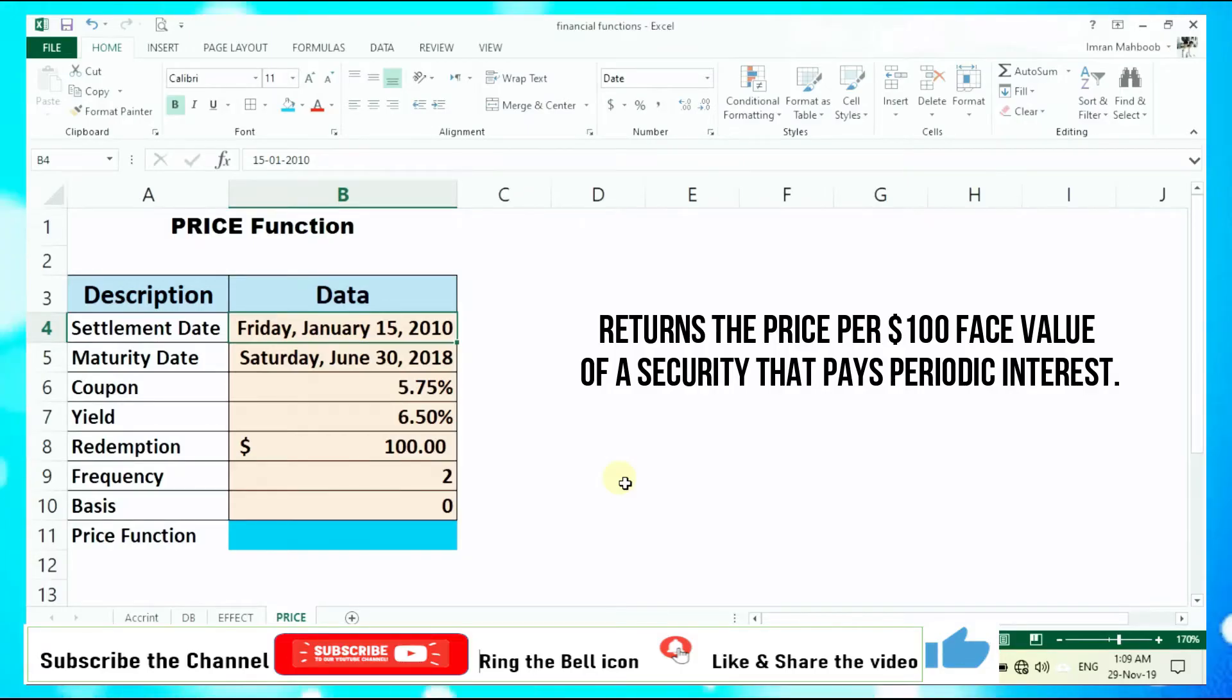Calculate the PRICE function. We have a settlement date of 15th January 2010, the maturity date is 30th June 2018, the coupon rate is 5.75 percent, the yield is 6.50 percent, the redemption value per 100 dollar face value, frequency is 2 because we want to calculate semi-annually, and the basis 0 means 360 days per year.